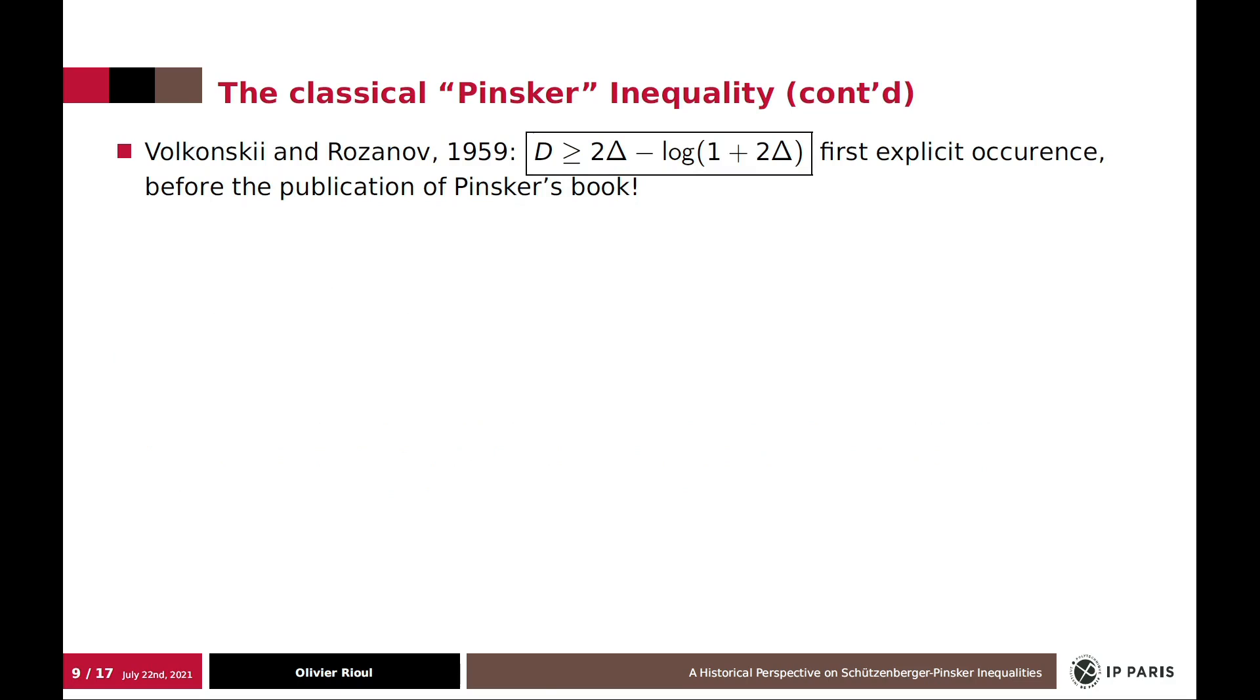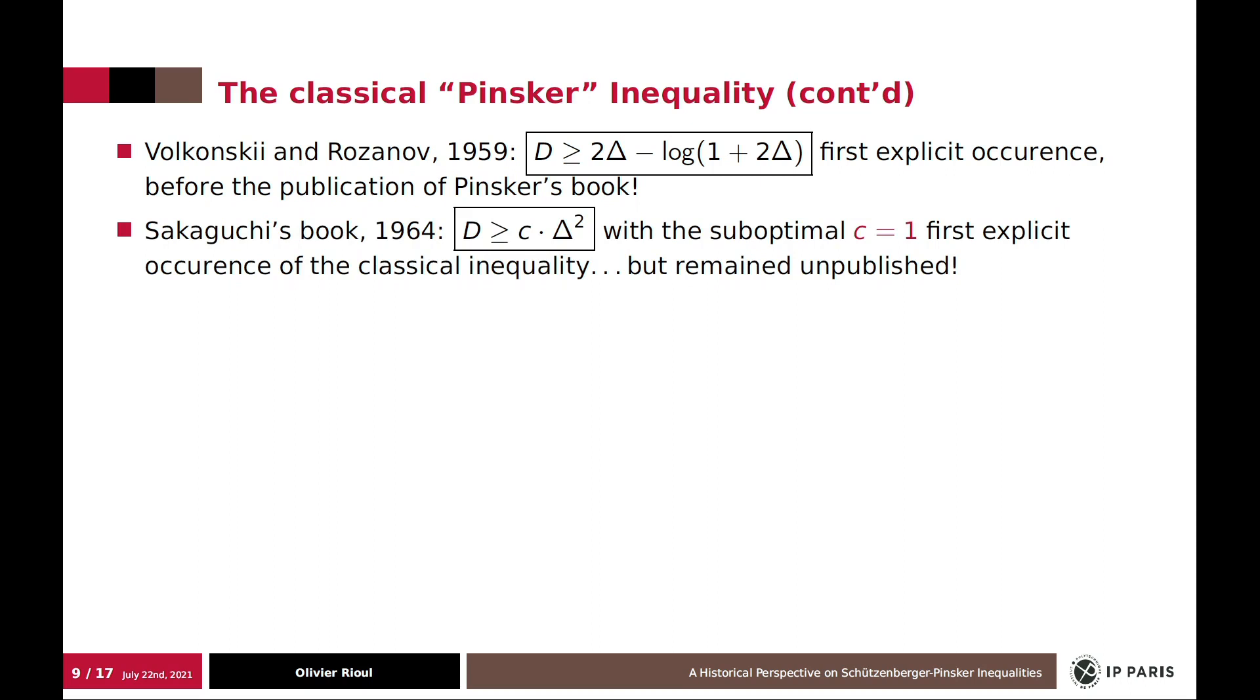So what happened then? The first publication of explicit occurrence of a Pinsker inequality was made even before Pinsker's book, but referring to Pinsker, by Volkonsky and Rozanov, which proved this, which is suboptimal, but still, it's the first occurrence of Pinsker inequality.